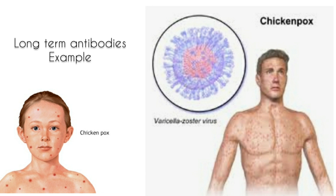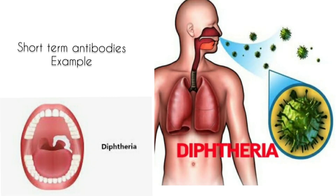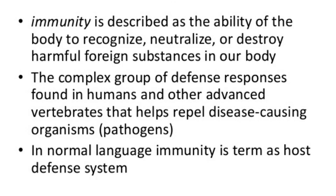However, immunity to some bacterial diseases like diphtheria and typhoid will last only a few years. The antibodies will remain only for a brief period, and after the antibodies disappear from the blood, the immunity against the disease is lost. Immunity is the ability of a body to recognize and resist a specific infection or a toxin by releasing antibodies against it.